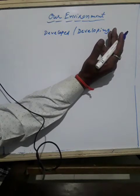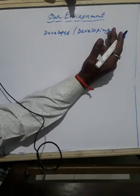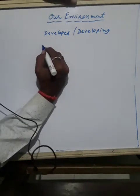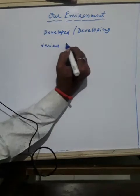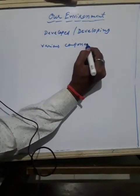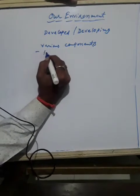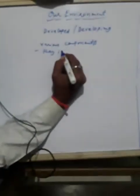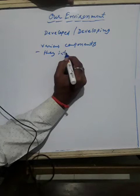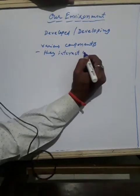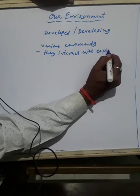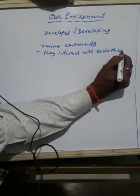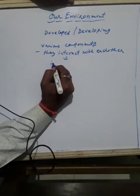So in this chapter, what are we learning? We are studying how various components in the environment interact with each other, and how we impact the environment. We are studying about the various components, how they interact with each other, and what impact they have on the environment.